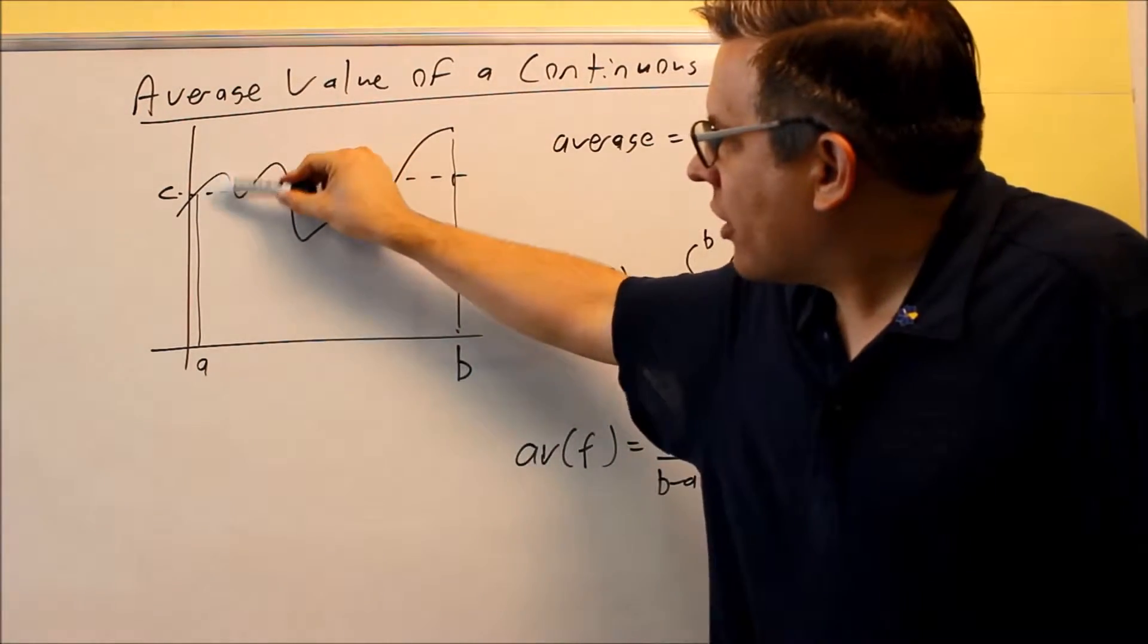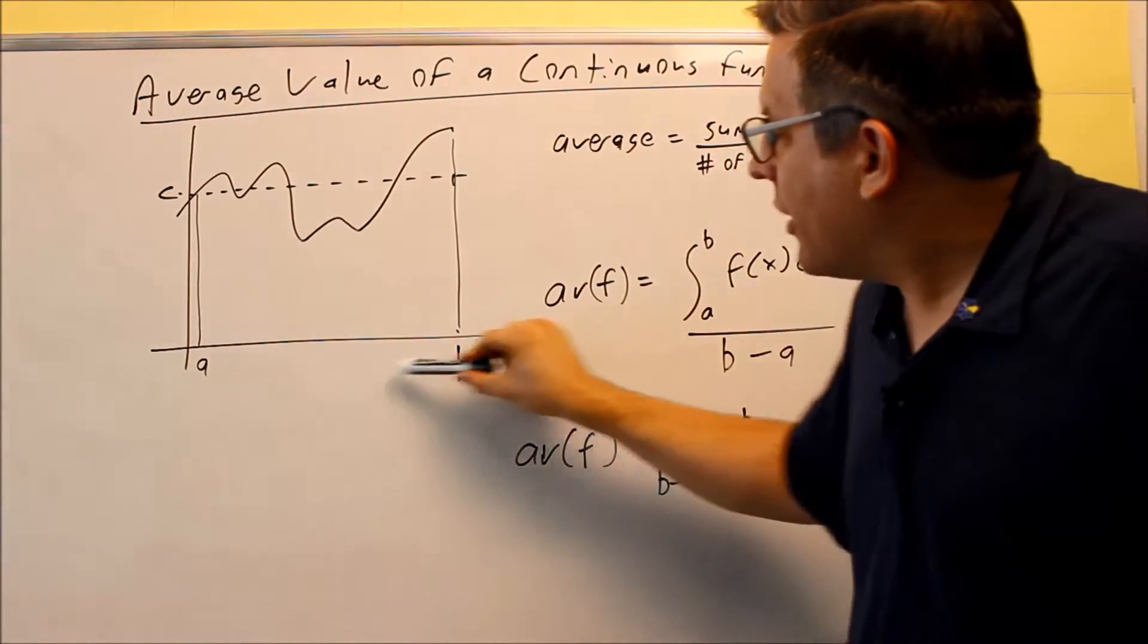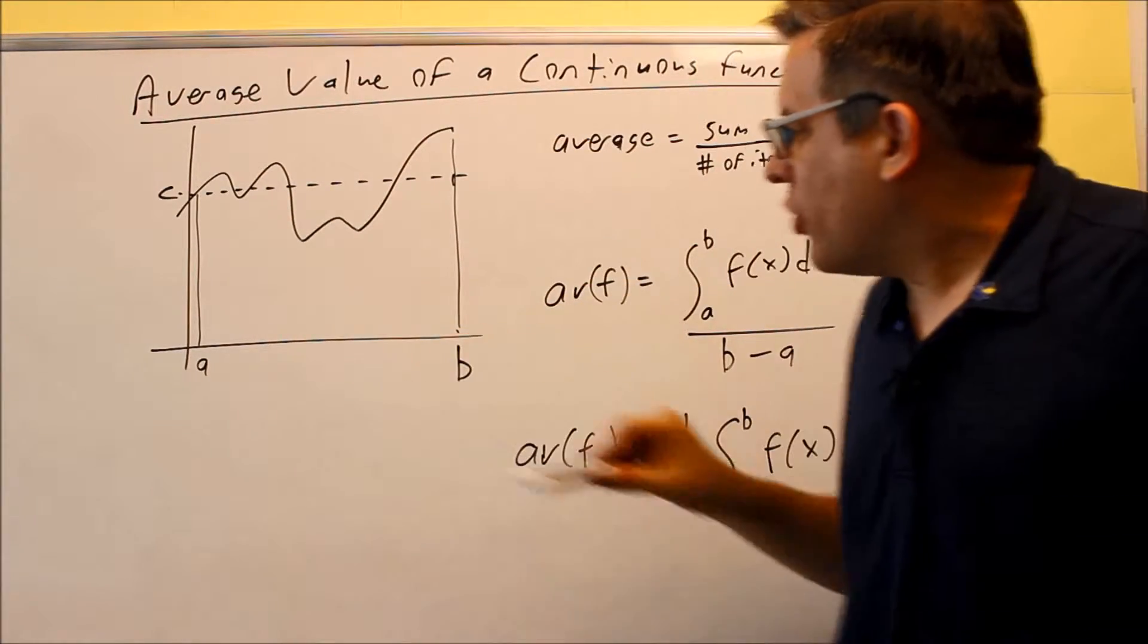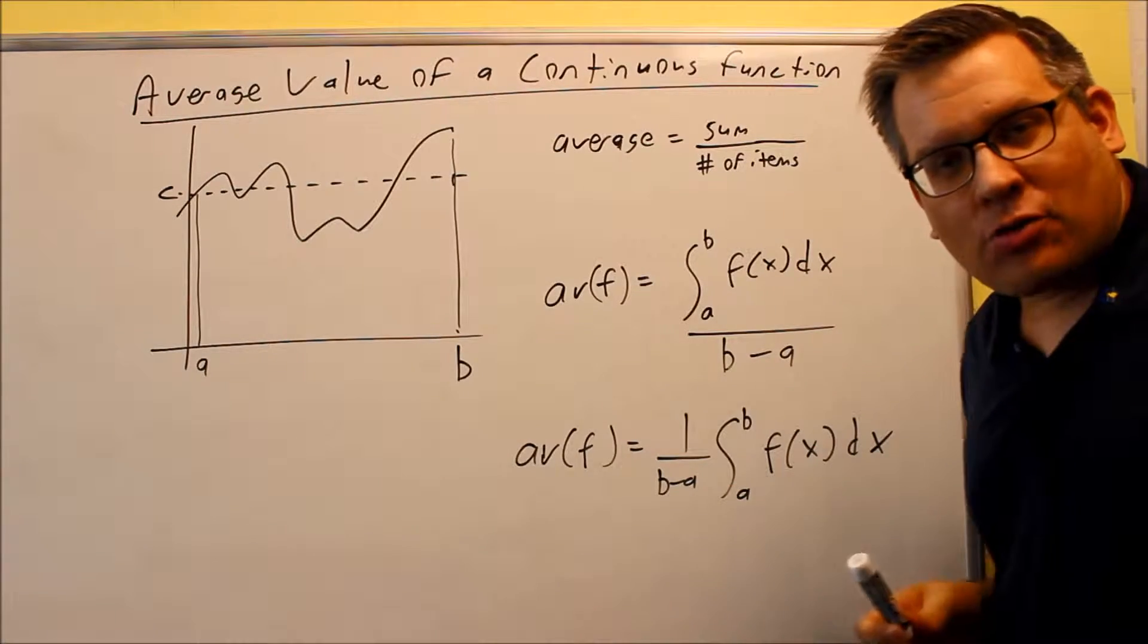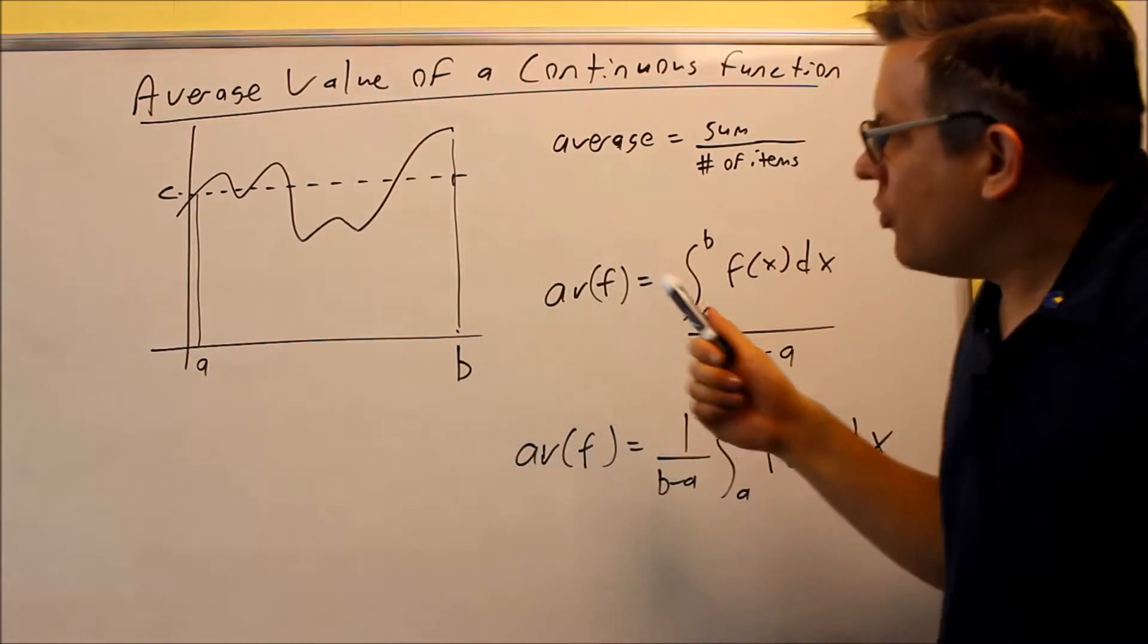In this case, you're adding, you're taking a whole bunch of different heights all the way up and down and you're dividing it by what's between A and B. That's geometrically how you're going to do this.